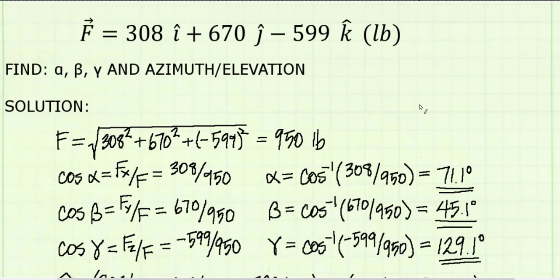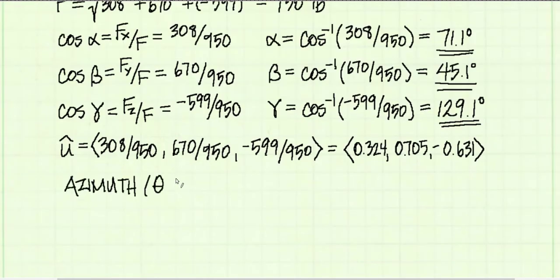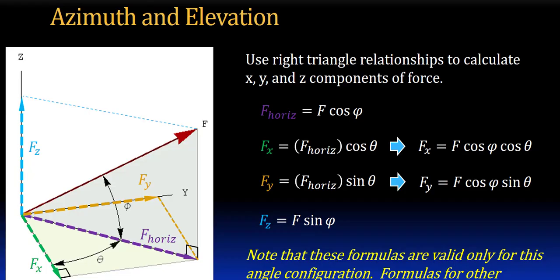I'm going to use the same notation. I'm going to define theta from the x-axis and phi from the x-y-plane. Since I'm using the angle configuration that's shown in this figure, I can use the equation shown to find my theta and phi angles. Remember the note that the formulas that are shown here are only valid for the angle configuration shown. If you're measuring theta from the y-axis or phi from the z-axis, then these equations are no good.